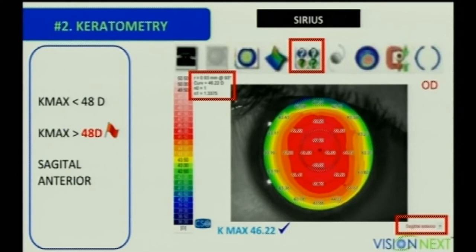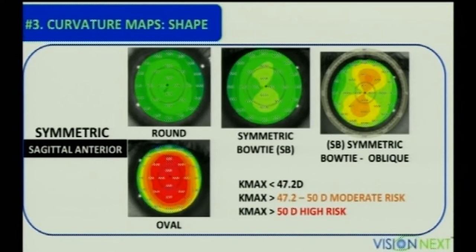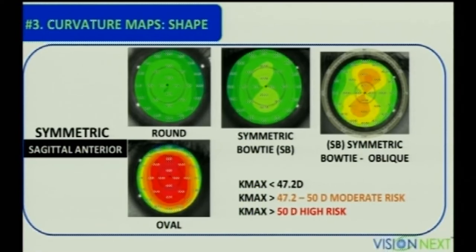Then move on to the curvature maps. Look for the K-max — the maximum keratometry on the sagittal anterior. If it is less than 48 diopters, that is a good sign; more than that is definitely abnormal or needs further evaluation. Also look at the actual corneal topography on the sagittal anterior. We can classify them as symmetric ones like the round, oval, symmetric bow tie, and symmetric oblique — most will be normal unless the K-max is on the higher side.